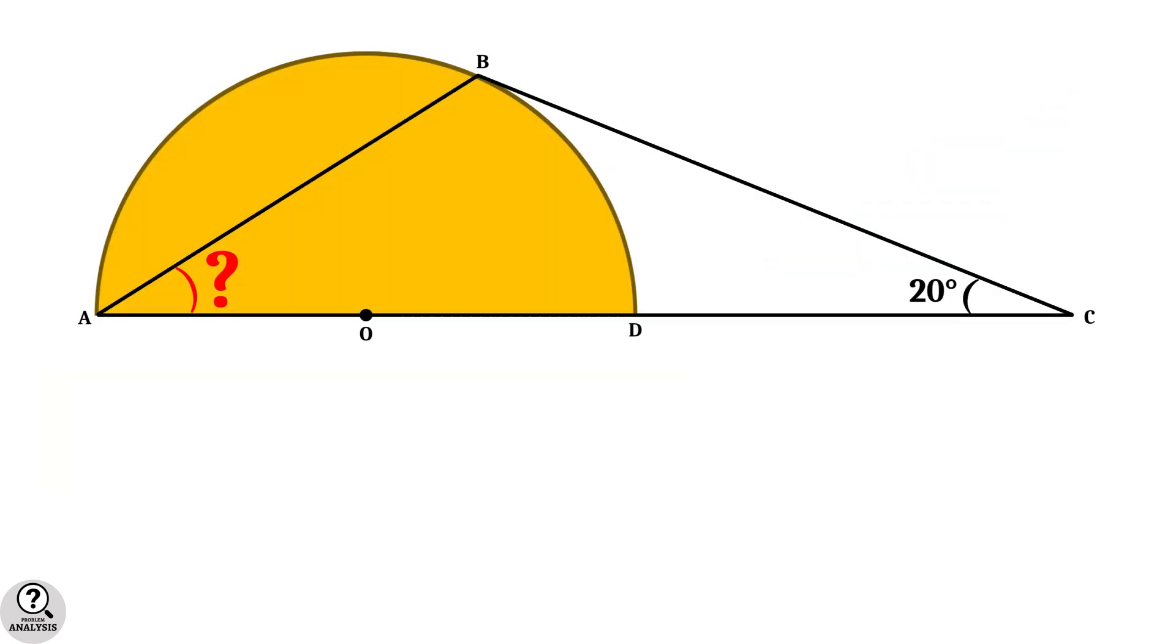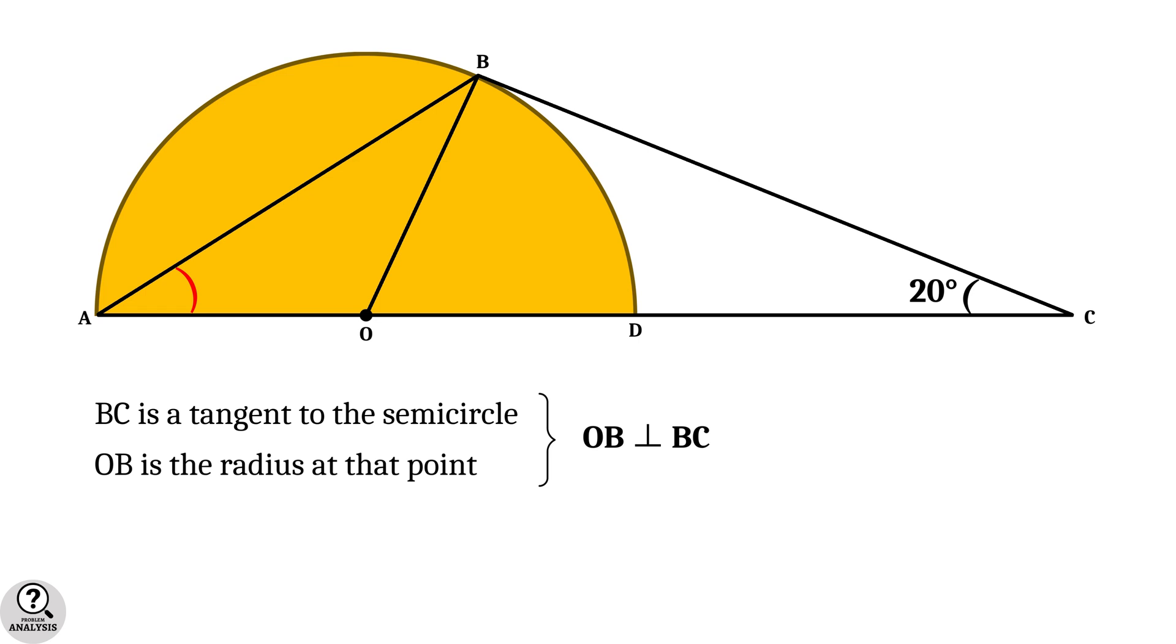Now observe the diagram and draw the radius OB. Note that the line BC is a tangent to the semicircle and OB is the radius drawn from its touching point. Then by the second property we mentioned, radius OB is perpendicular to the tangent BC. That implies angle OBC is equal to 90 degrees.